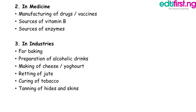In medicine, we have the manufacturing of drugs, vaccines, and a source of vitamin B and enzymes. Microorganisms are used in medicine for the manufacturing of drugs, vaccines, and antibiotics which help in curing many human diseases. For example, penicillin — an antibiotic obtained from the fungus Penicillium notatum — and streptomycin, another antibiotic obtained from the bacterium Streptomyces griseus.